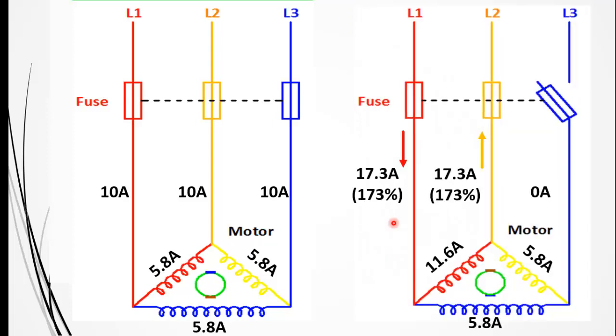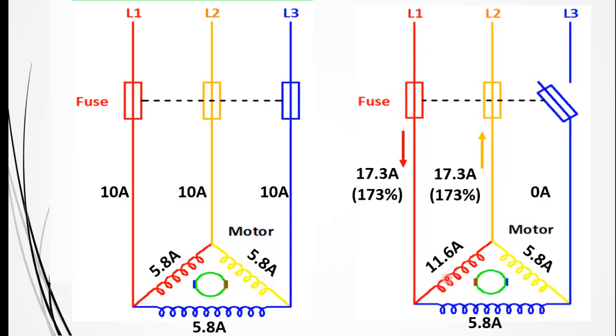Now for instance, one of the three phases opens because of the disconnection of this fuse, or maybe this fuse blows. What happens? No current will flow in this phase, whereas 173% of the normal current will flow in the other two phases, and the motor windings are carrying double the rated current. Here you can see that one of the windings is carrying 11.6 amperes while the other two are carrying 5.8 amperes. This is a very dangerous situation because all the motor windings are carrying excessive current than they are designed for.